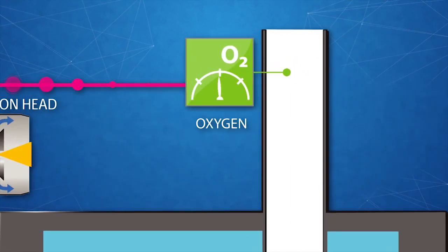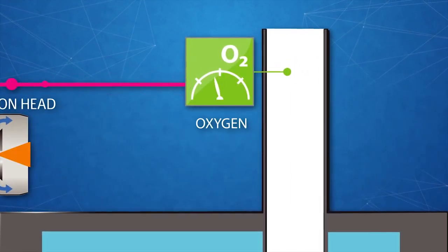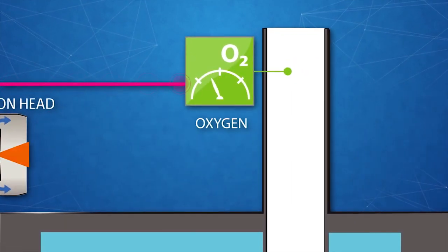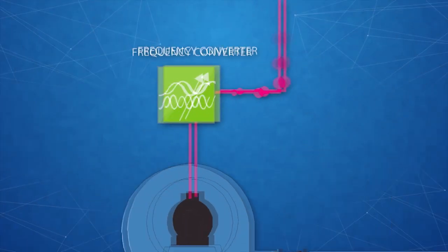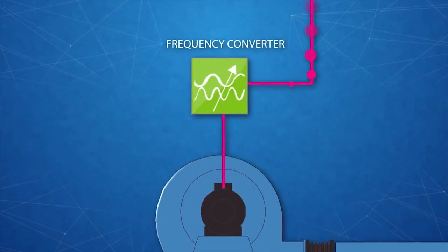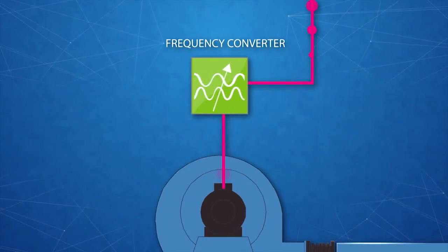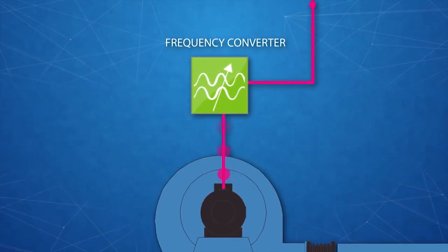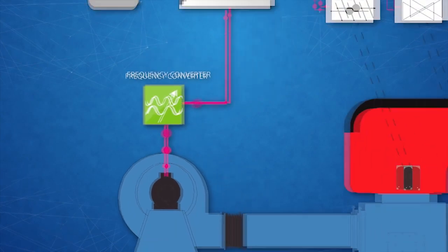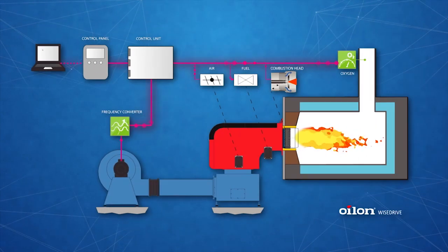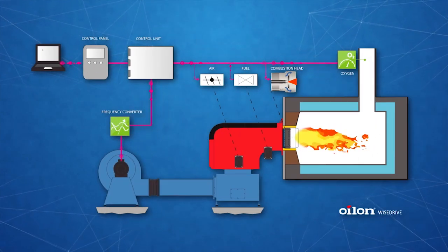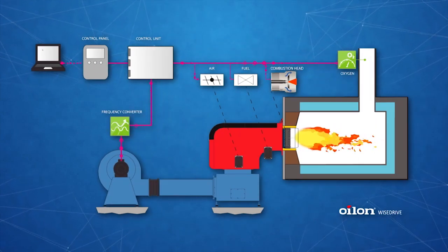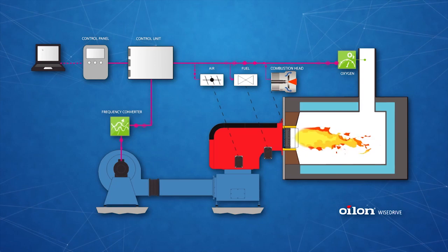The oxygen sensor observes the residual oxygen levels. The frequency converter adjusts the fan motor rotation speed. The CAN bus cable transmits information between system units and the control panel.